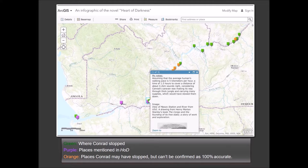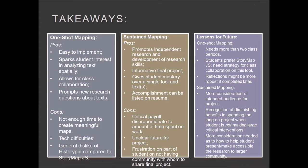Here's where I get to the cons. He got so into the minutiae that we kind of lost sight of the big question: what is the critical intervention? What has this taught us about Heart of Darkness? Frustratingly, it taught us very little. We had an impressive map, but we weren't really sure what it told us about the novel. The critical payoff seemed disproportionate to the amount of time spent on the work. Moreover, there was an unclear future for this product — where should we bring this map, what do we do with it, who is its audience? There was real frustration about not having an immediate community for working on this project.